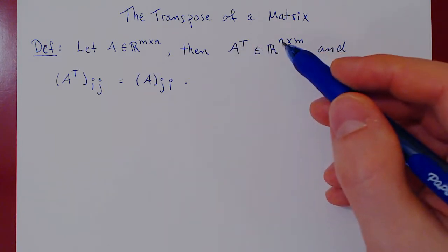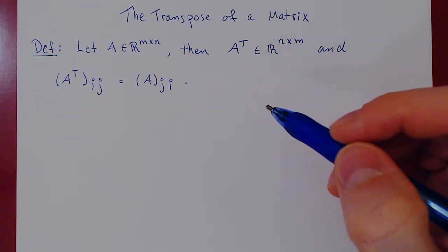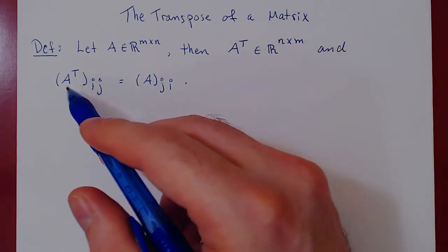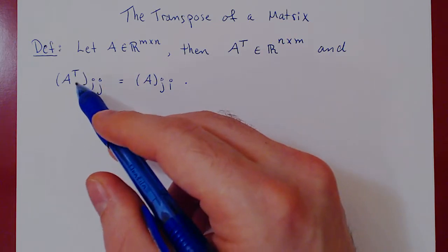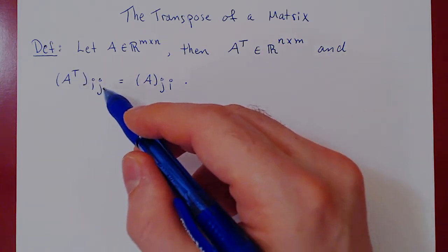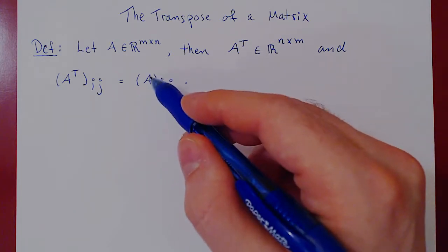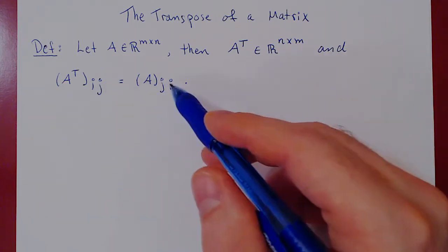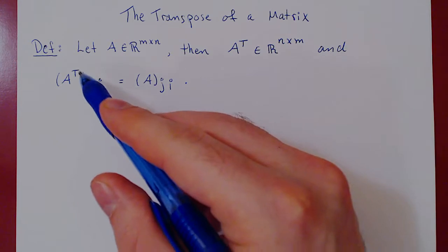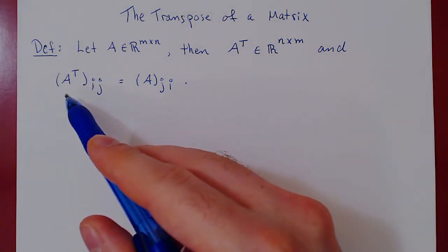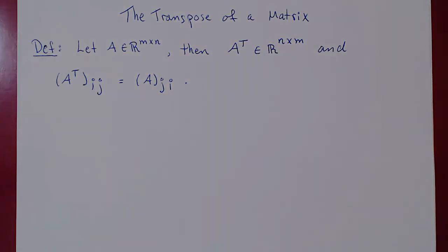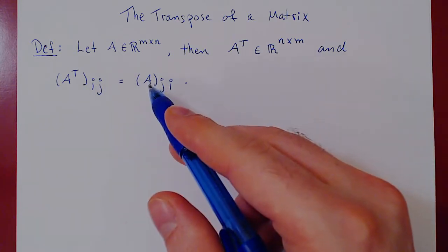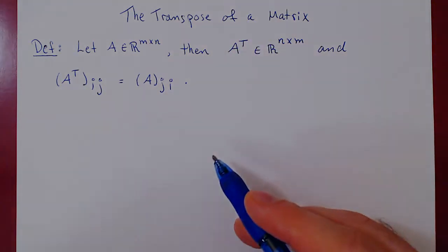The transpose of A will be an n by m matrix. If you ask how to find the entries of A transposed: the entry of A transpose in the ith row, jth column is the entry of A in the jth row, ith column. You flip the row and column index of A to get the entry of A transposed. Let's consider a simple example so you can see that the transpose is a very simple operation.